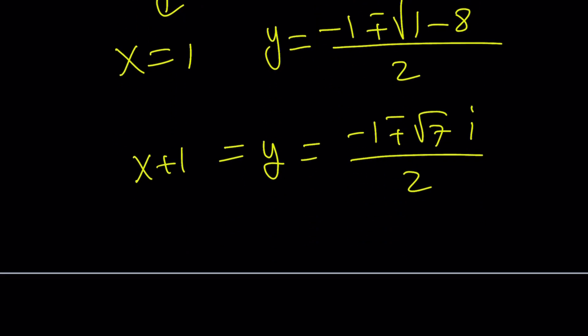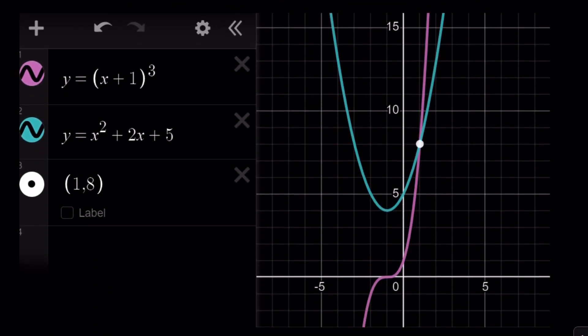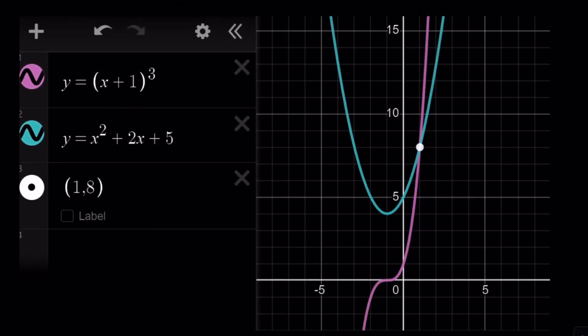Let's take a look at the graph real quick. A parabola and a cubic function intersecting at a single point, that is at x equals 1, because there's only one real solution. The others are complex. This brings us to the end of this video. Thank you for watching. I hope you enjoyed it. Please let me know. Don't forget to comment, like and subscribe. I'll see you next time with another video. Until then be safe, take care, and bye bye.